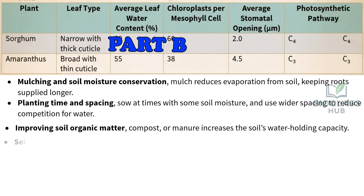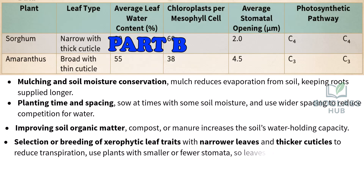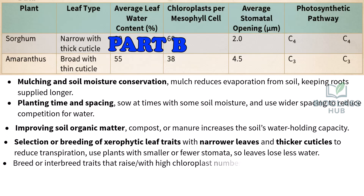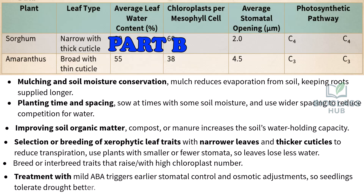Selection or breeding of xerophytic leaf traits: narrower leaves and thicker cuticles to reduce transpiration. Use plants with smaller or fewer stomata so leaves lose less water. Breed or interbreed traits that raise chloroplast number. Treatment with mild abscisic acid triggers earlier stomatal control and osmotic adjustments, so seedlings tolerate drought better.